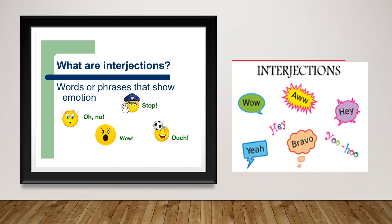The last one is interjection. An interjection is a word which expresses certain feelings. For example: oh no, stop, wow, ouch, ow, hey, yay, bravo. These are words that express sudden feelings — that is interjection.